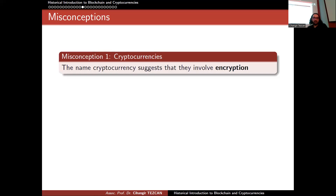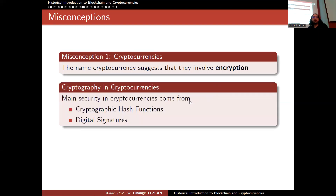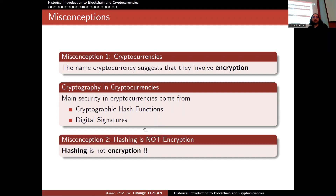Let's recap some misconceptions about cryptocurrencies. The name suggests they involve encryption, but actually no block ciphers, RSA, or ElGamal are used in cryptocurrencies. The main security comes from cryptographic hash functions and digital signatures. In Turkey, for some reason, people think that hashing is encryption — but it is not. You might hear someone say 'we encrypted it with SHA-256.' No, you didn't. It is not an encryption algorithm.